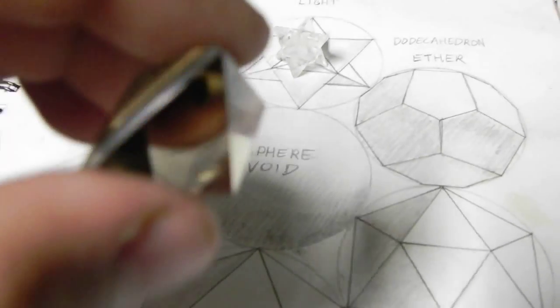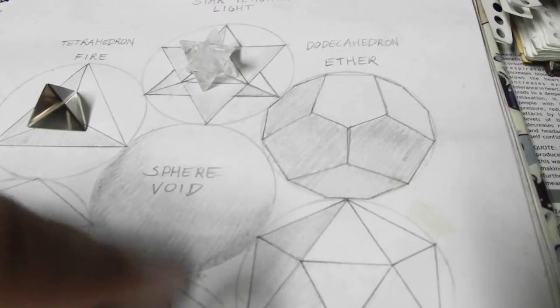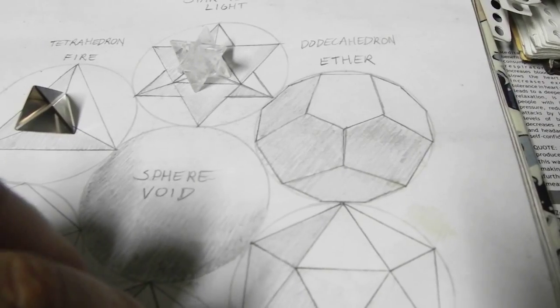Then there's the octahedron. This is like what the basis of the pyramids in Egypt. It's like half of an octahedron are used with. That's the solid that they used was the octahedron.